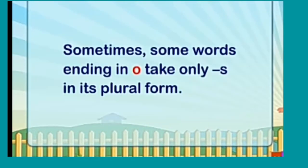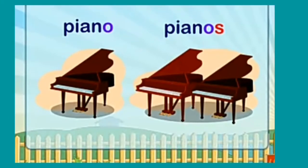Sometimes some words ending in O take only S in their plural form. Kuch words aise hote hain jinki ending O se hoti ho, toh unke piche bhi ES lagayenge — toh bhi woh plural ban jayega. Jaise ki piano → pianos.